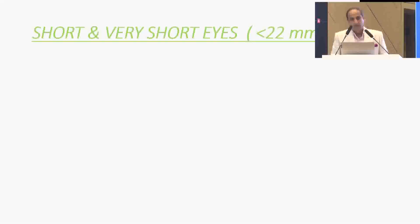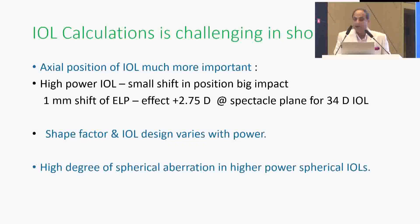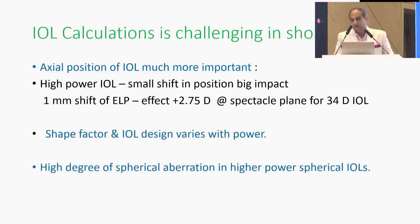Now coming to short eyes. We quantify a short eye as less than 22 mm axial length. The axial position of the IOL becomes very important in these eyes — higher power IOLs mean a small shift in position has a big impact. Only a 1 mm shift of the effective lens position, or ELP, results in a 2.75 diopter change at the spectacle plane for a 34-diopter IOL. IOL powers in short eyes are more than 30 diopters. The shape factor in IOL design varies with power, and high spherical aberration in higher-power spherical IOLs is also an issue.